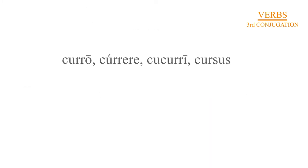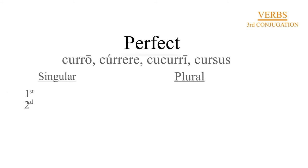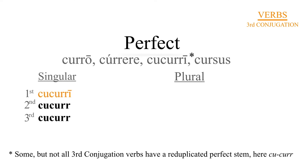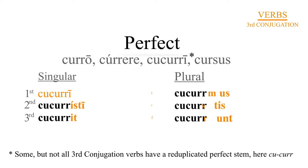Now we turn to the perfect system. And as you'll notice, we have a reduplication of the perfect stem — not just cur, but curēt. Starting with the first person singular, curēt. Second person singular, curēt. Third person singular, curēt. First person plural, curēmus. Second person plural, curētus. Third person plural, curērunt.